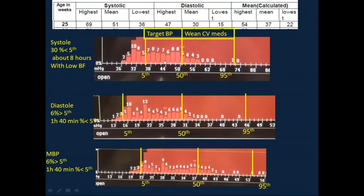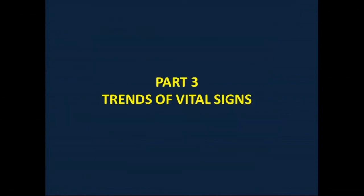Overall, this infant needs more support. Once blood pressure is maintained within target, you need to maintain support or wean very gradually. If blood pressure is between the 5th and 95th centile or higher, consider weaning faster and discontinuing cardiovascular medication — as long as blood pressure stays above the 5th centile. That covers blood pressure histograms. Next we'll discuss part 3: trends of other vital signs.